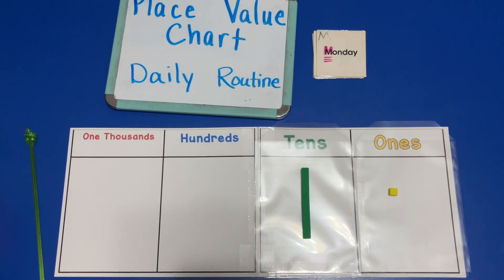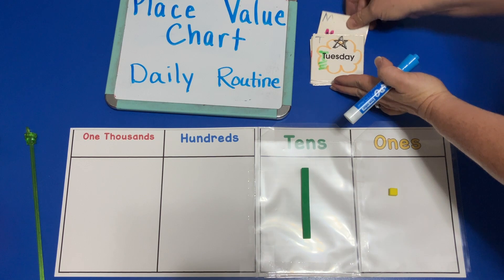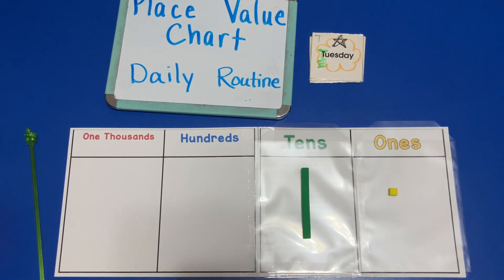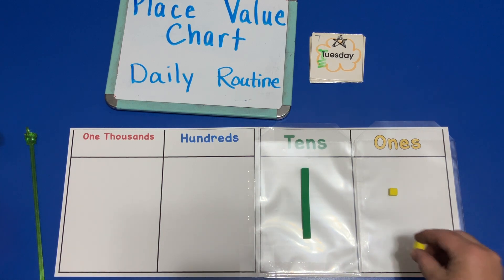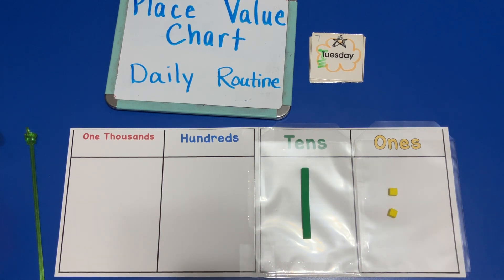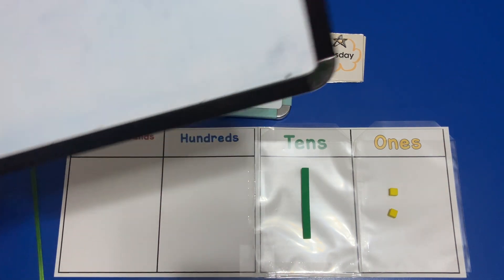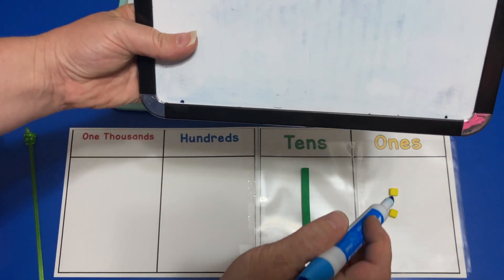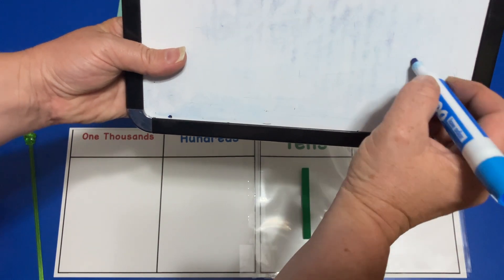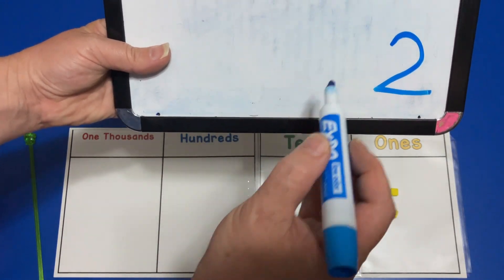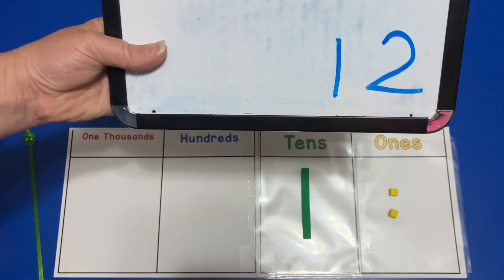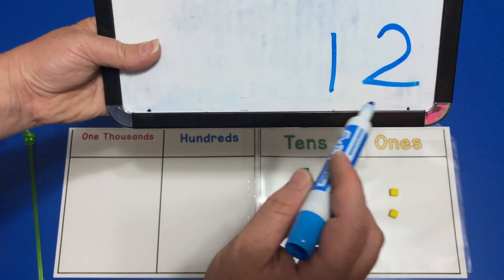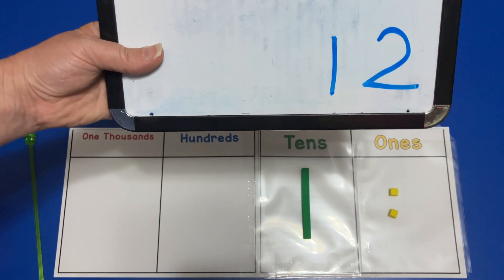And then we go to Tuesday. On Tuesday we add another unit. When we add that other unit, we say: what is the value of the base-10 blocks that we have on our place value chart? Well, we have one, two units, and we have one group of ten. If we have one group of ten and two units, that makes the number twelve.